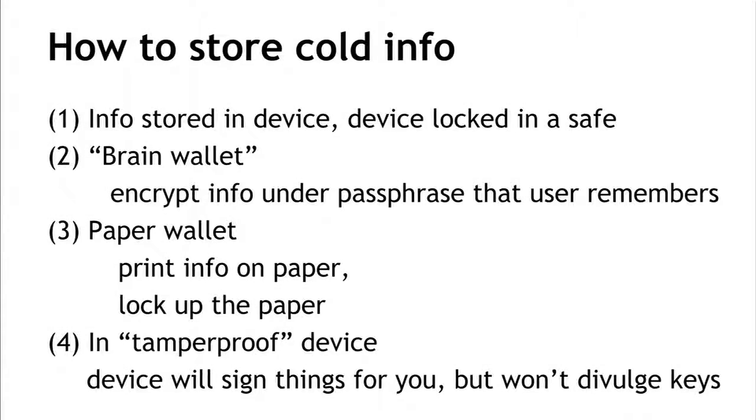The fourth way to store offline information is to put it in some kind of tamper-proof device. The idea is that we either put the key into the device or the device generates the key, and the device is designed so there's no way it will output or divulge the key. The device might sign a statement with the key when you press a button or give it a password, but it never gives out the key itself. If we lose the device or it's stolen, we'll know it — unlike the theft of key information where we might not realize someone has our key. In general, people may use a combination of all four methods to secure their keys.